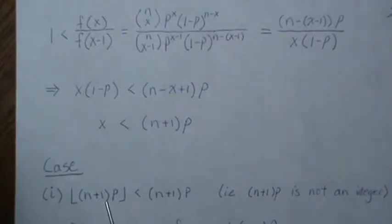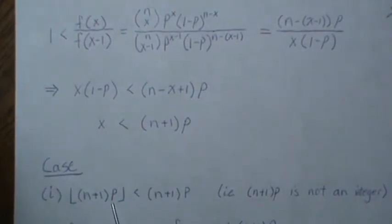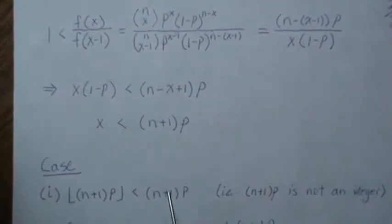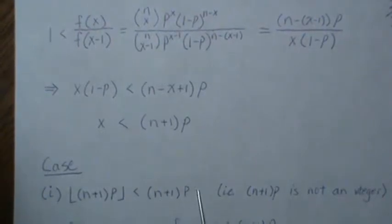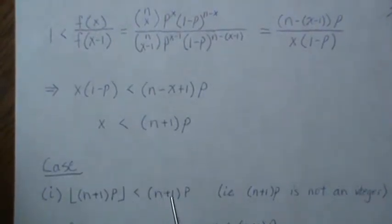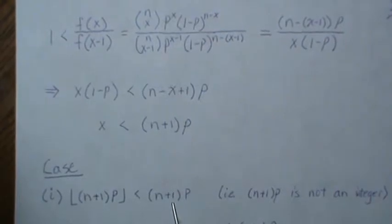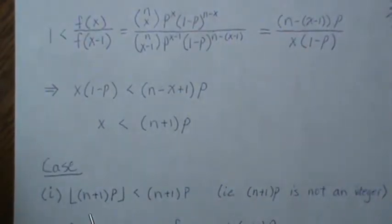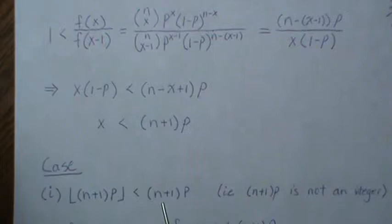So if you take the floor to get the integer, and if that's less than this number, meaning this is not an integer, it's fractional, like 10.1, and then you take the floor of it, you get 10. That's this first case. So it's not an integer.